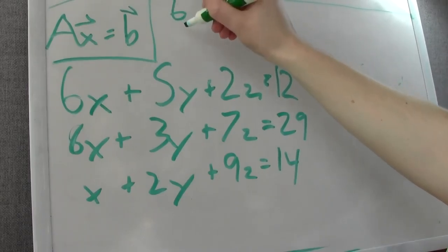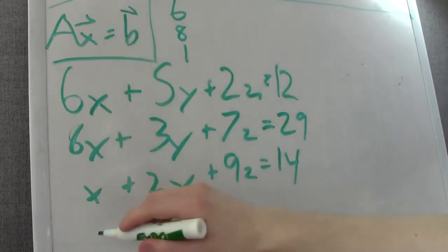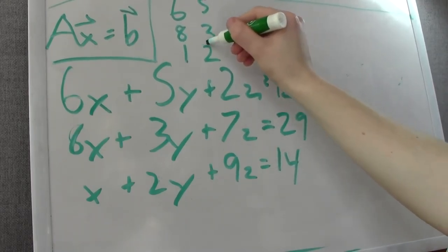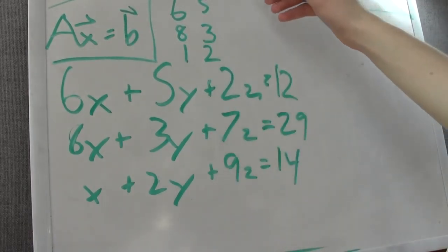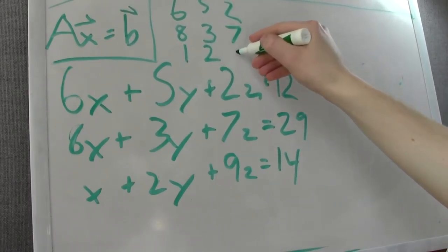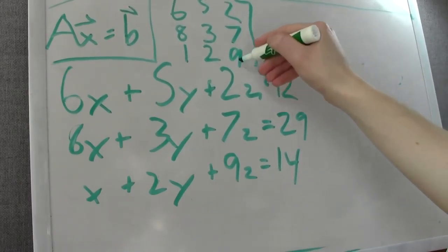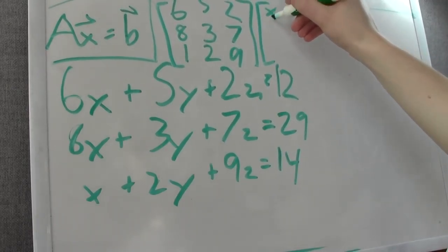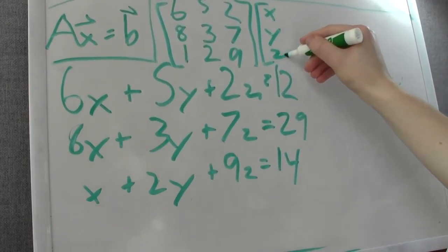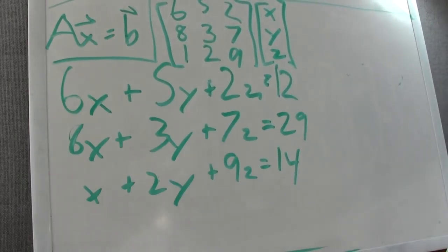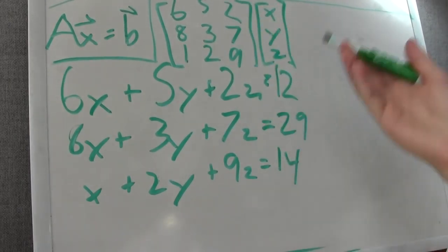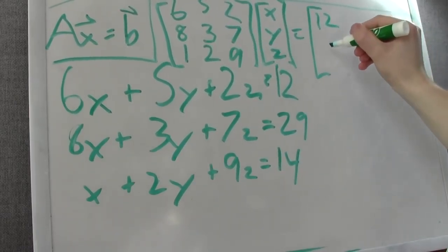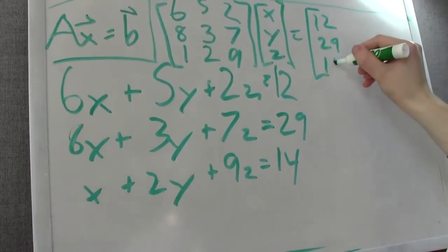So we have 6, 8, 1—those are the x values. 5, 3, 2—those are your y. And 2, 7, 9 for your z. We make sure to include your x, y, and z on the side here, and then we have our b vector, our result vector, and that equals 12, 29, and 14.